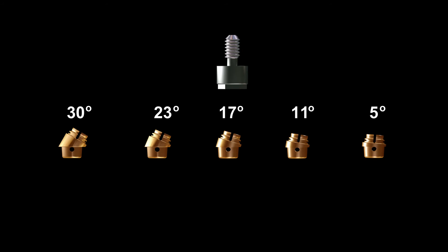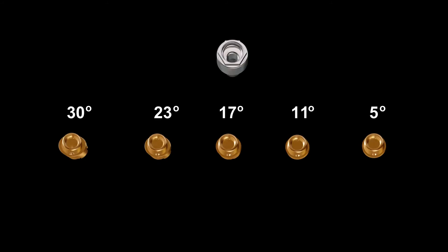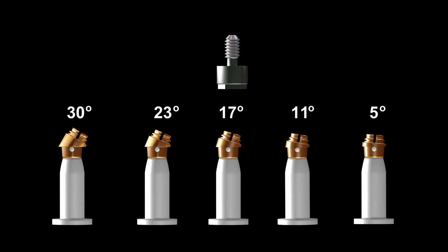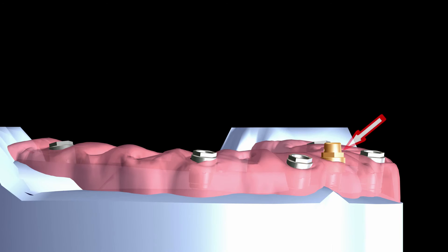The ERA correction abutments will be used to correct the non-parallel implants. These two-piece abutments are available in 5, 11, 17, 23, and 30 degrees. If the implants are parallel to the overdenture's path of insertion, a zero-degree one-piece abutment with the appropriate cuff height is utilized.